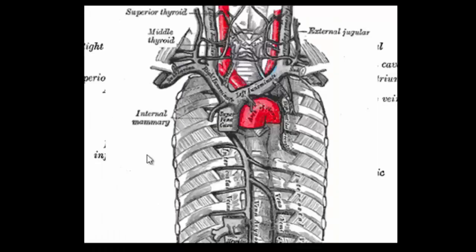Looking at the veins of the thorax, let's start with the right subclavian vein, picking that up here where it passes over the first rib, separated from the subclavian artery by the scalenus anterior muscle — so it's anterior to, in front of, the scalenus anterior. And the first major structure to join it here is the external jugular, which is coming down fairly subcutaneously.